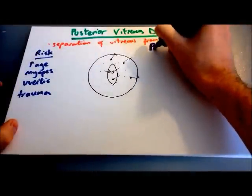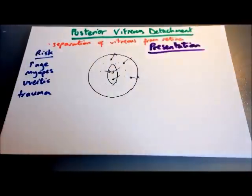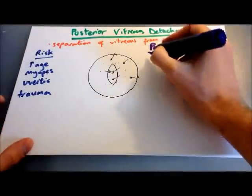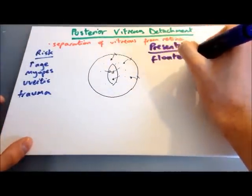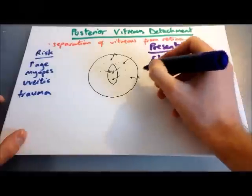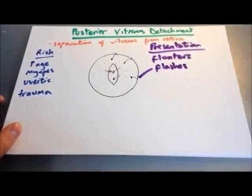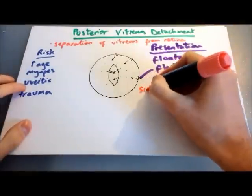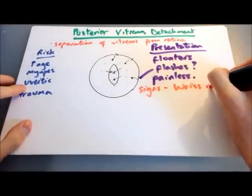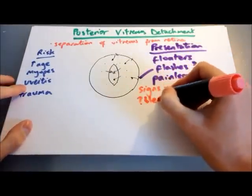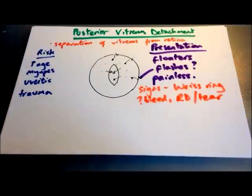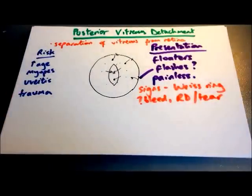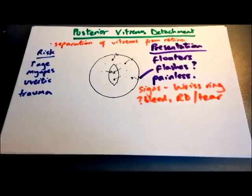The patient will present with the painless appearance of multiple floaters as a result of this breakdown of the vitreous. There may be flashes in the vision if there's any traction exerted on the retina as the vitreous pulls away from it. A number of signs might be seen on examination — there's the Weiss ring, which is a thin irregular ring of translucent material within the vitreous humour itself on a slit lamp exam. That's the posterior surface of the vitreous which becomes visible as it pulls away from the retina. There might also be a haemorrhage, retinal detachment, or a tear, but they might not always be there.